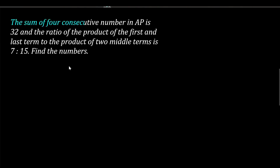In this question, the sum of first four consecutive terms in an AP is 32, and the ratio of the product of the first and last term to that of the product of the two middle terms is 7:15. We have to find these numbers.